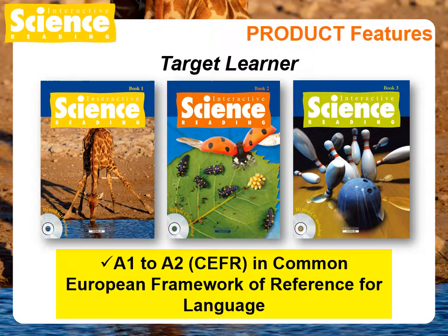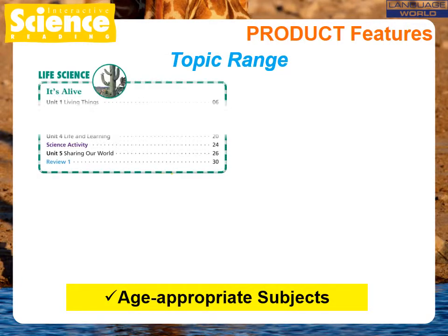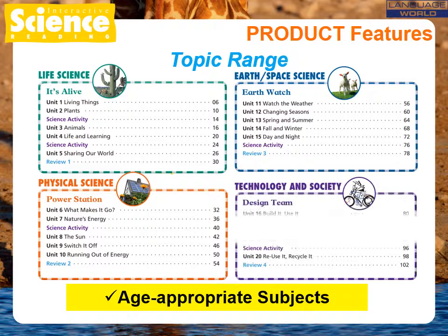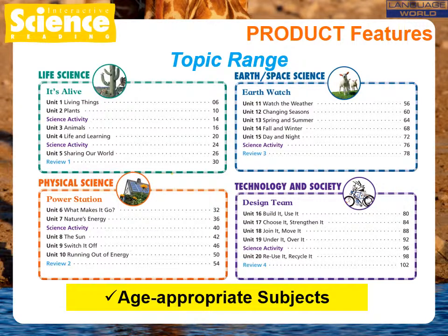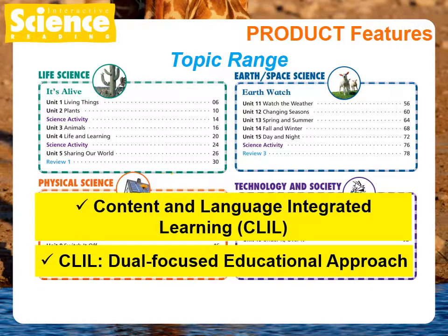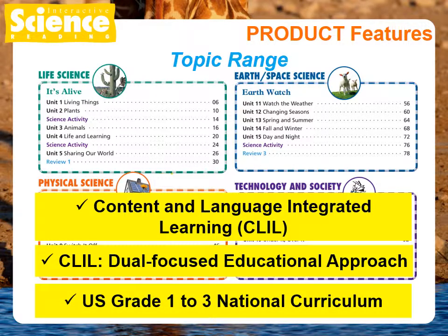Now students can experience science at work in the world around them as they explore the many interesting layers of Interactive Science Reading. Topics cover age-appropriate subjects about life sciences, physical science, earth and space science, and technology in society. This book is well designed for Content and Language Integrated Learning, CLIL — a dual-focused educational approach in which an additional language is used for the learning and teaching of both content and language. The contents are based on the national curriculum of the US, grades 1 to 3.